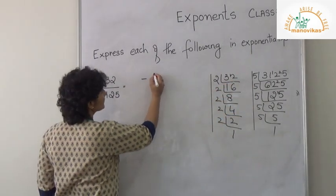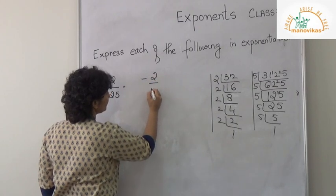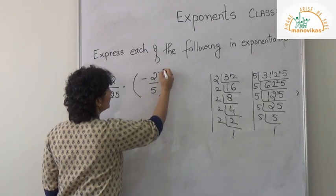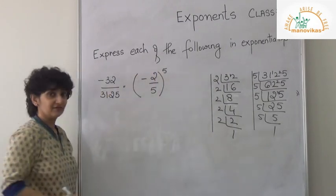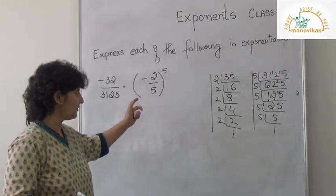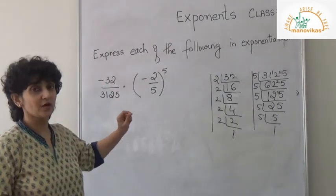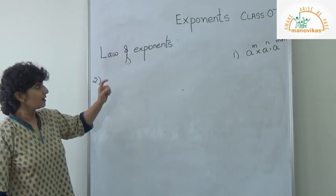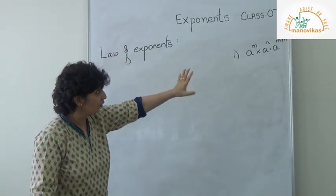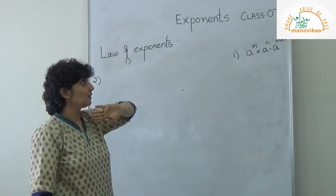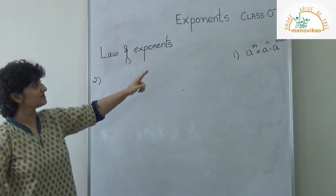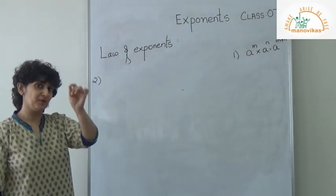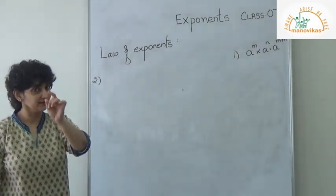So it is minus 2 upon 5, the whole to the power 5. I'm sure by now you have understood exponential form. Our first rule — you already know — is: a to the power n into a to the power n is equal to a to the power n plus n.